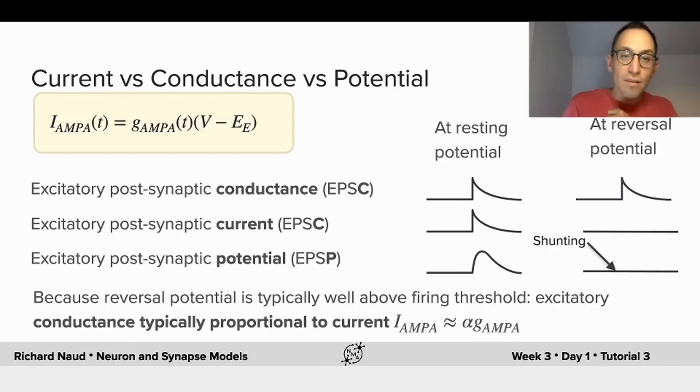Now, because the reversal potential of excitatory synapses is very far above the threshold, the conductance is typically proportional to the current, and we don't really need to think about this effect. For inhibitory synapses, however, this is not the case, and a shunting effect is often observed.